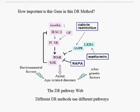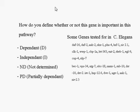Scientists have developed criteria to assess how important a gene is to a given dietary restriction method. If a method is dependent on a gene, it cannot produce a life extension without it — and knocking down that gene shuts the life extension pathway. If it's independent, knocking it down means the method has nothing to do with longevity. If not determined, it simply hasn't been tested yet. If partially dependent, knocking it down has some effect on longevity but it's not 100% dependent on it.